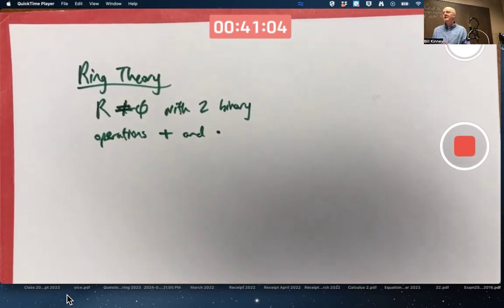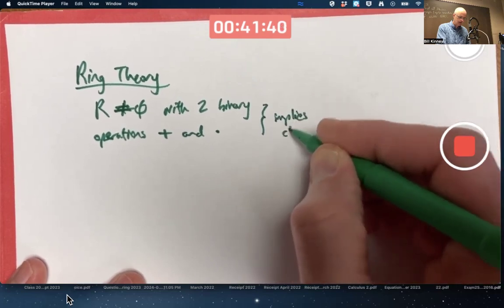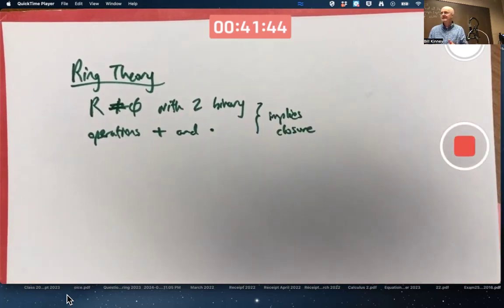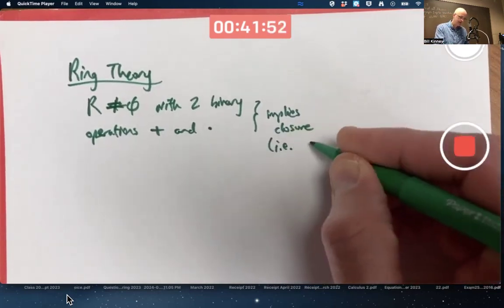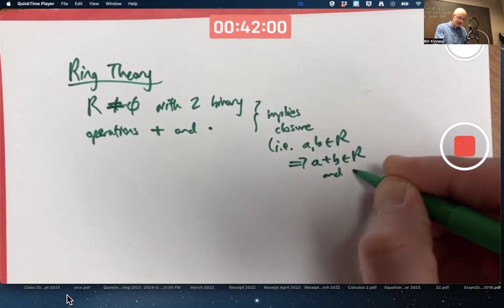So it's not an empty set. It's a non-empty set with two binary operations. Remember, just like with groups, our textbook has the convention that if I use the words binary operation, it's assumed to be closed. Some textbooks don't make that assumption. But our author says, let's just go ahead and assume binary operations are closed. This implies closure for us. So given two elements in R, A and B, A plus B would be in R and A times B would be in R.